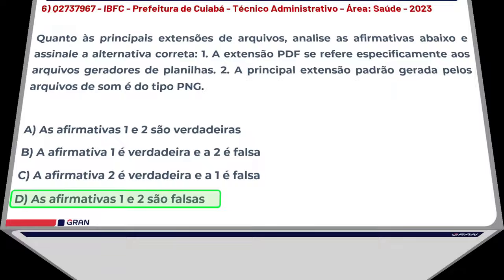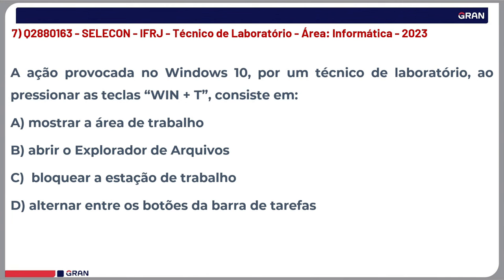Vamos para a próxima questão. A ação provocada no Windows 10 ao pressionar as teclas Win+T consiste em: A) mostrar a área de trabalho, B) abrir o explorador de arquivos, C) bloquear a estação de trabalho, D) alternar entre os botões da barra de tarefas.